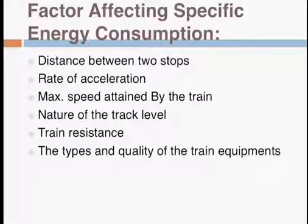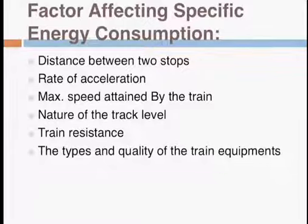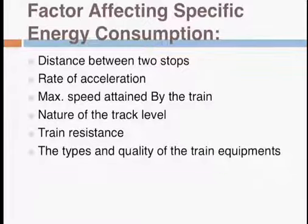The factors which affect specific energy consumption are: firstly, the distance between two stops; secondly, the rate of acceleration; thirdly, the maximum speed the train can attain; fourthly, the nature of the track level; fifthly, the train resistance; and sixthly, the type and quality of train equipment. These are the six factors which affect specific energy consumption. The specific energy consumption of a train operating at a given schedule speed depends on these factors.